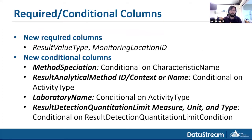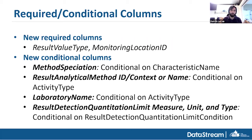We've also changed some of the required and conditional columns. In DataStream, some columns are required, some conditional, and some optional — to ensure we have all the robust metadata needed for others to reuse your data. Two new required columns: result value type, which differentiates between calculated, actual, or estimated values; and monitoring location ID, which is now mandatory. Before you could use just a name to differentiate sites, but the ID is a better differentiator for uniqueness.